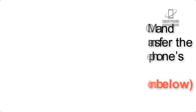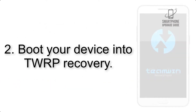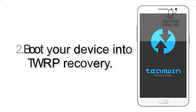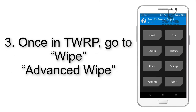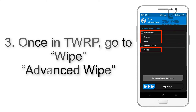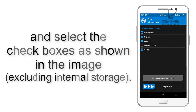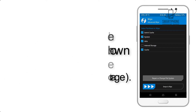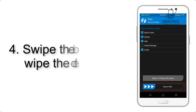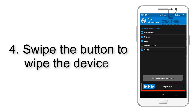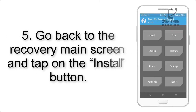Step 2: Boot your device into TWRP recovery. Once in TWRP, click on Wipe, then Advanced Wipe, and select the checkboxes as shown in the image, excluding internal storage. Step 4: Swipe the button to wipe the device.